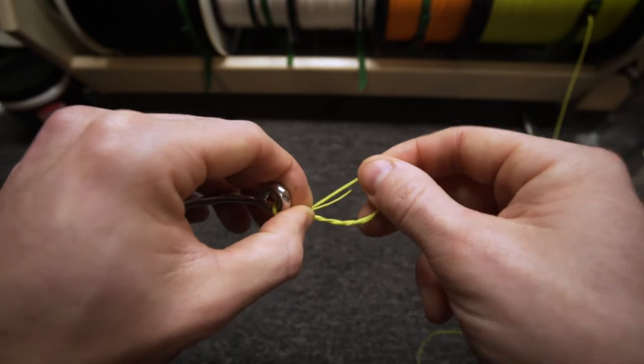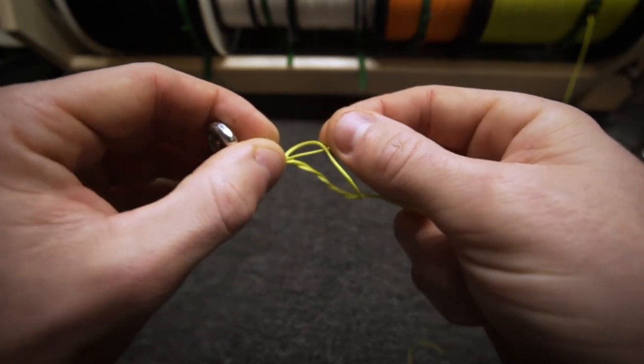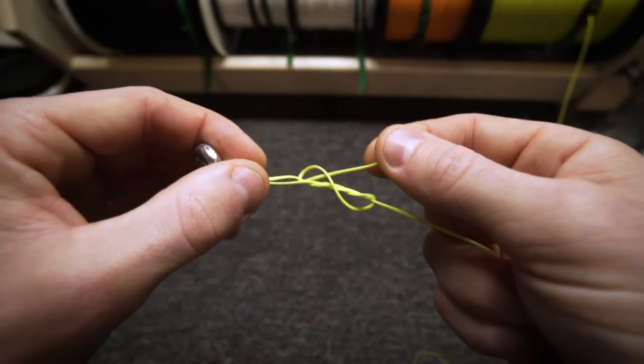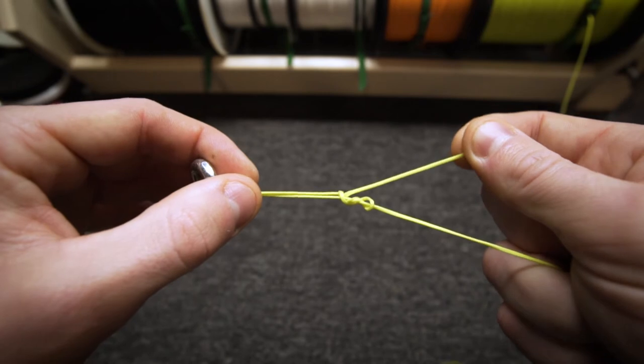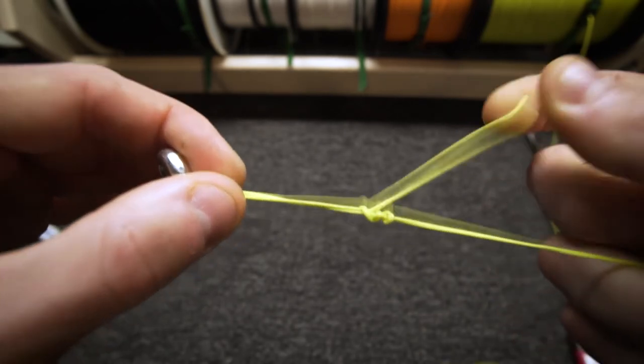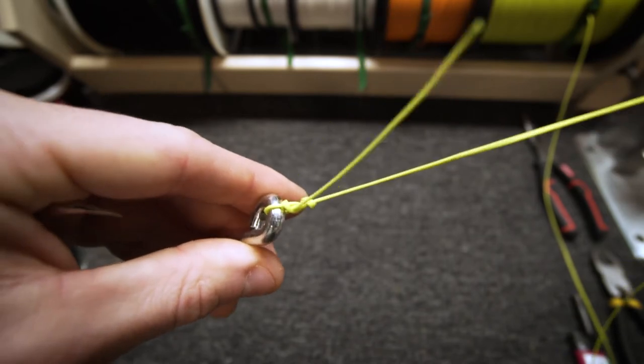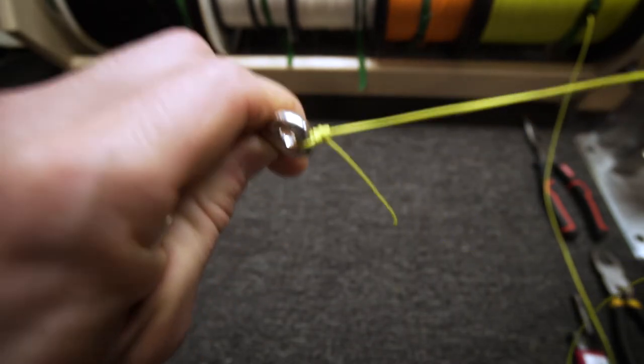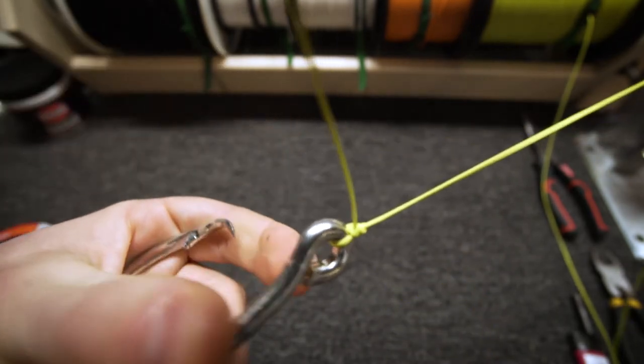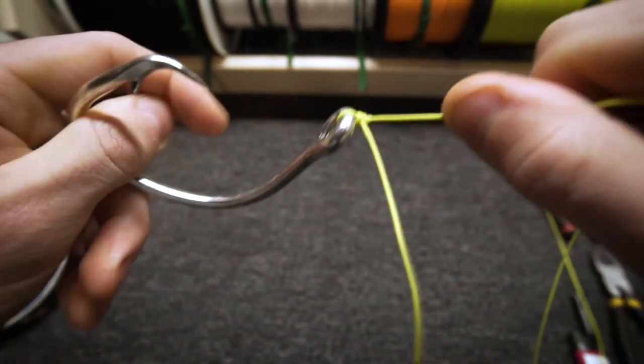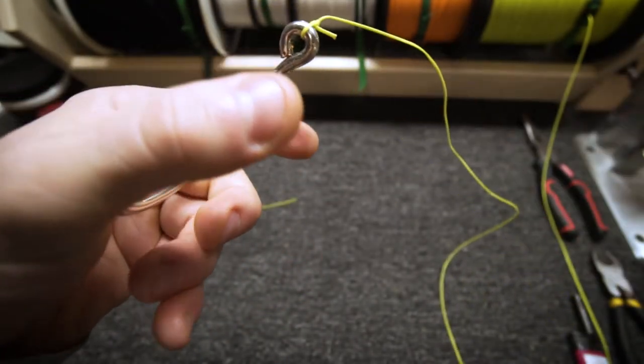But now to make the improved, you're going to go back through the original loop. What I do is I like to pull this tag end so that it starts my barrels. Once I'm started, then I pull from the main line which will bring it down and clinch it on top of itself. That creates the perfect barrels. This is a more locked knot. This is the knot that I use for 99% of all clinch knot situations, the improved clinch knot.